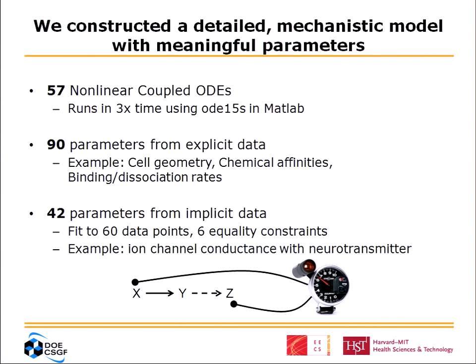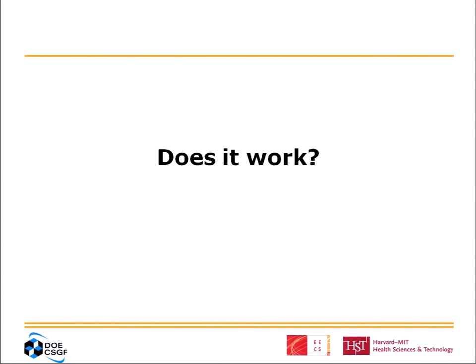What I mean by implicit data is that if there is a cascade where component X activates Y and Y activates Z, and we know the relationship between X and Y but not between Y and Z, we have implicit data that measures how Z behaves when you change X, and from that we can infer the direct effect of Y on Z. So we built this model — and does it work?